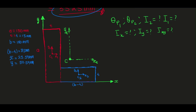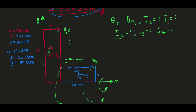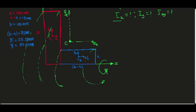Let's go ahead and find Ix, which is the mass moment of inertia about the x-axis — in other words, the rotation of this whole body about the x-axis. We want to rotate everything about the x-axis, so you can imagine this whole body rotating about the x-axis.